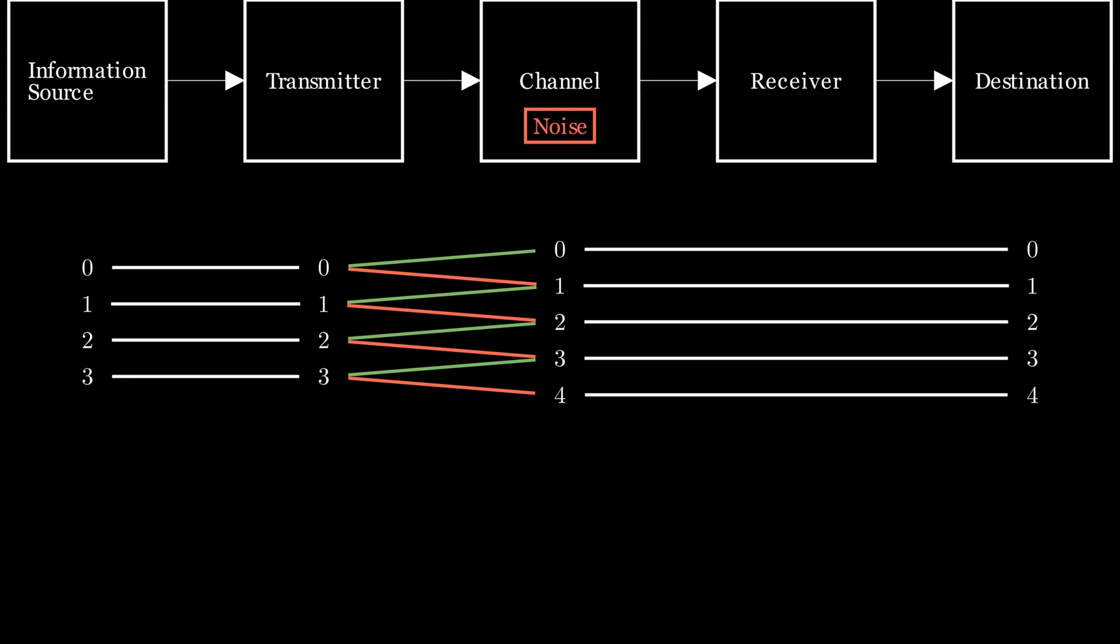Currently, there is no way to unambiguously map the message that was received at the destination to the message that was sent. But there are outputs that are non-confusable. Let's say we just send 0 and 2. Now, there is no ambiguity about the message on the receiving side.